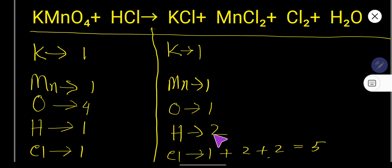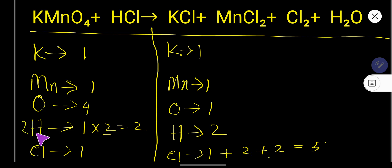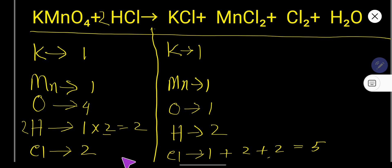Let us balance hydrogen first. Here hydrogen is 2, and on the right side it is 1. To balance hydrogen, multiply the water molecule by 2 — place coefficient 2 before H₂O. This gives 2 hydrogen on the right. Since the coefficient is 2, the number of oxygen in water becomes 2, and the number of chlorine in HCl stays at 2.